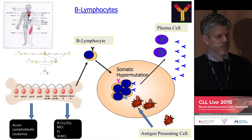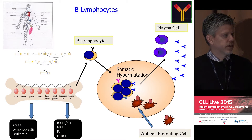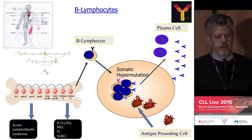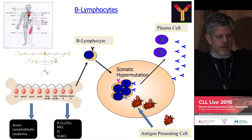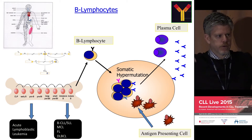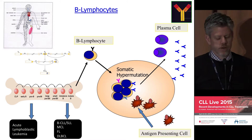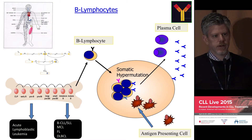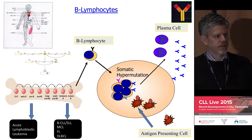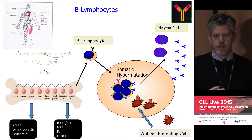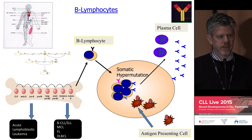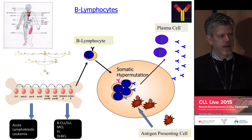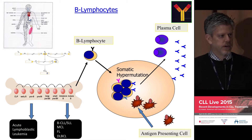The B cell receptor is critically important in recognizing foreign substances, and has obviously been developed evolutionarily for the purposes of protecting us from infection. The ends of the immunoglobulin — the B cell receptor — are where the recognition part is occurring. Once B cells are circulating in the blood and settle out in lymphoid regions like the lymph nodes, that is where they will encounter antigen, for example in the setting of infection, undergoing somatic hypermutation to develop the best fit for what they're attacking.